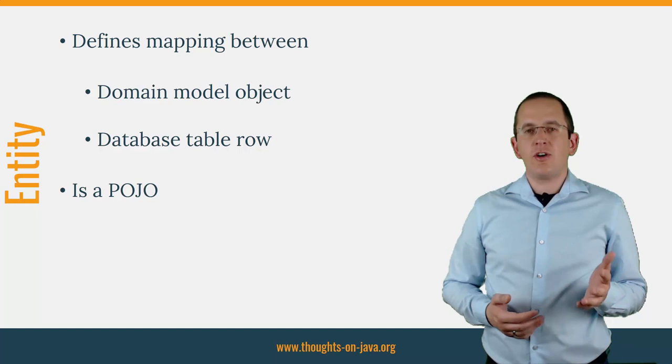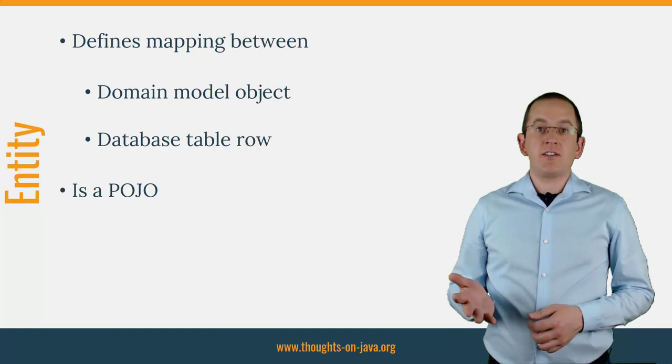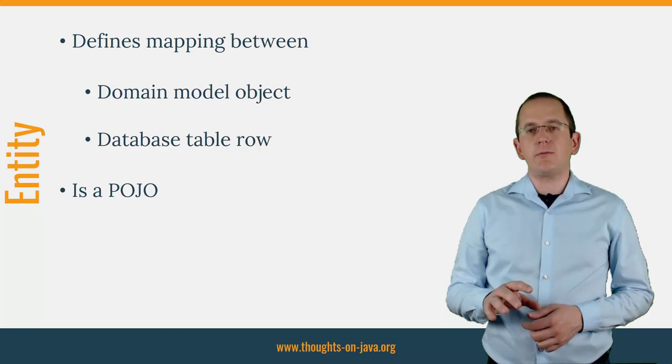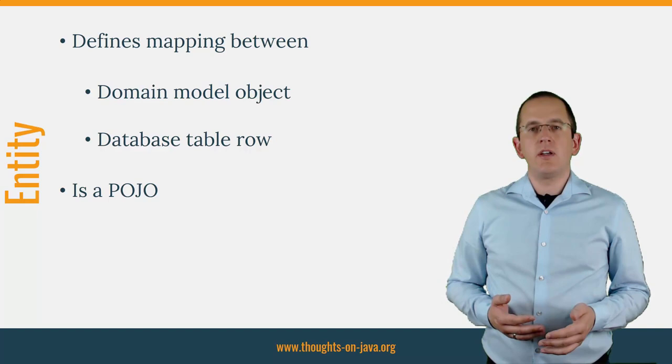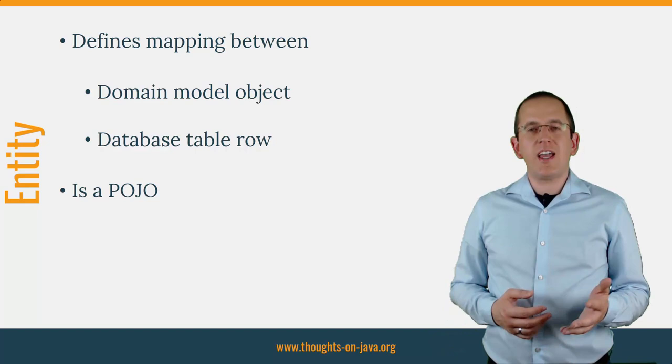With or without the mapping annotations, your entity objects are still POJOs, or plain old Java objects. That means you don't need to extend any framework-specific classes or implement any interfaces. JPA or its implementation also don't add any code to your class. A JPA entity is just a pure Java class which you can use in your APIs and send to remote clients.